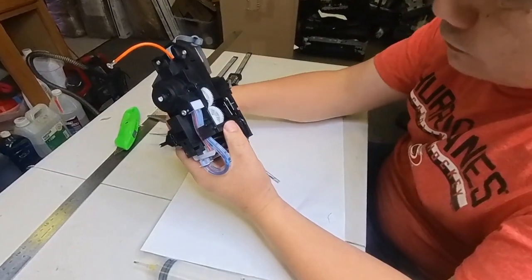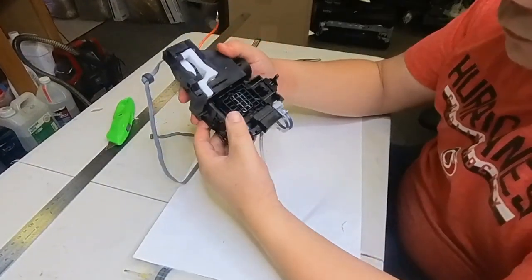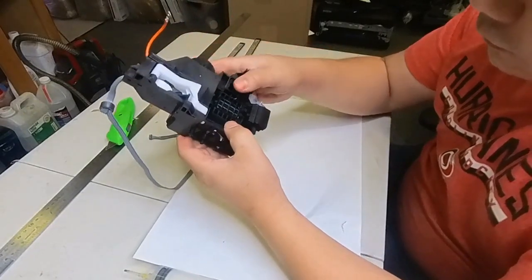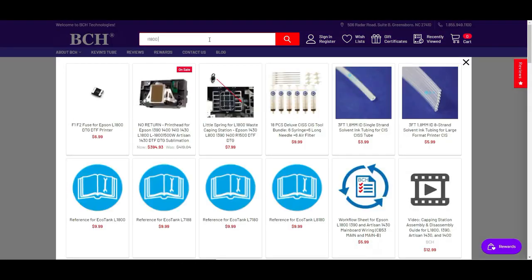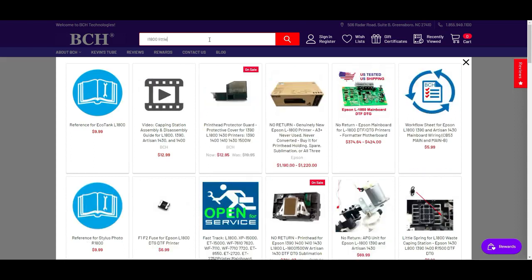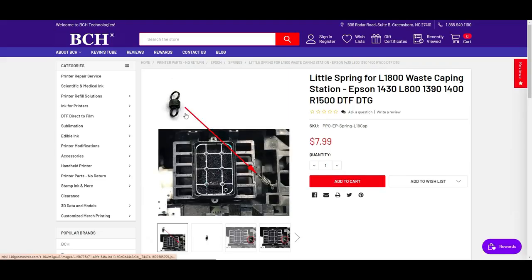This is the capping platform, and it's tied by this little spring. You're going to lose this spring sometime in the future. Make sure you know where to get it. Go to bchtechnology.com and look for L1800 little spring for waste capping station. You're going to lose it, I just know it.